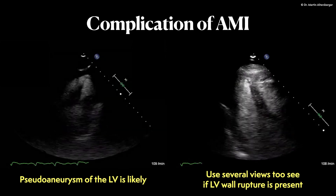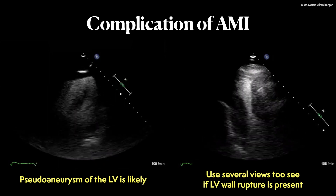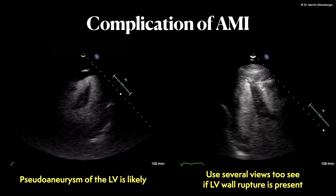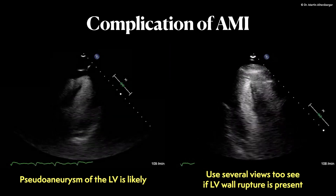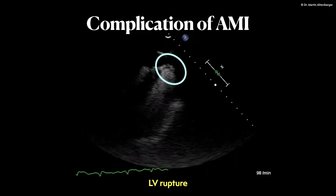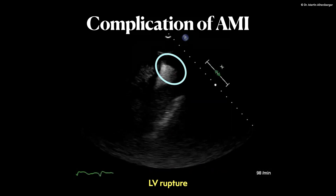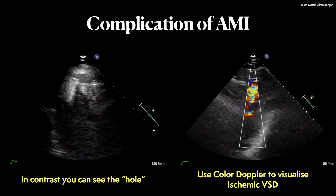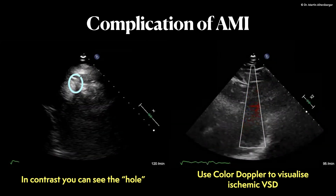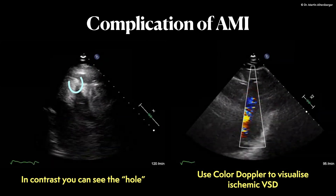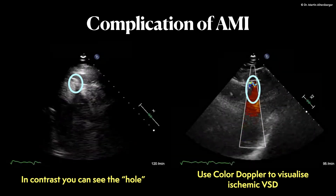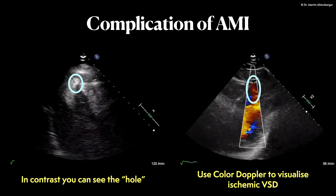A pseudo-aneurysm can also be caused by acute myocardial infarction. In several views, including the apical long axis view with contrast enhancement, a rupture of the left ventricular wall is present. In more detail, the LV rupture is happening at the apex. Using more views with contrast we see flow turbulence and a hole in the interventricular septum of the left ventricle. Using color Doppler, we confirm that there is truly an ischemic VSD.